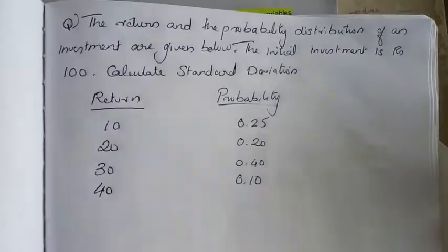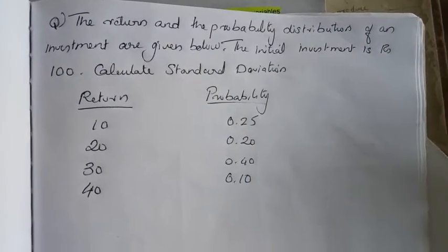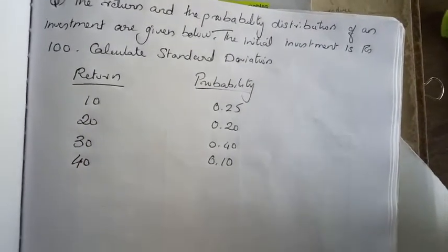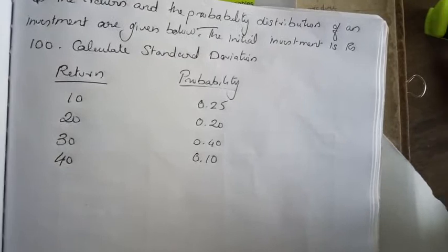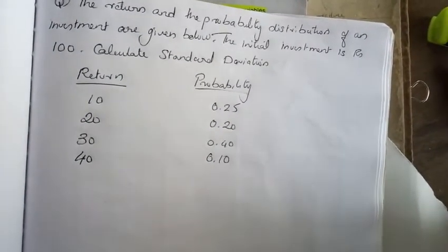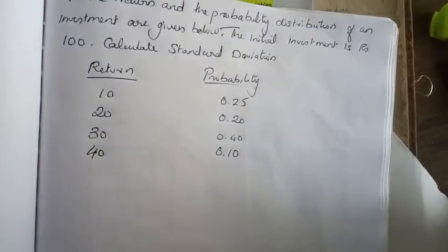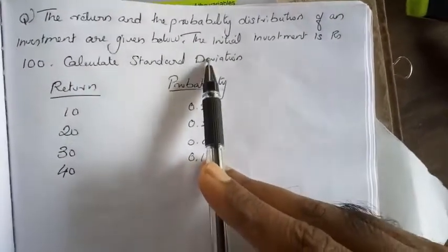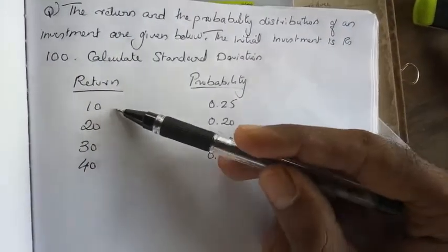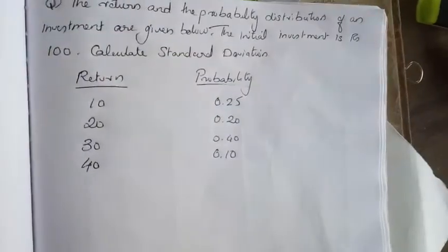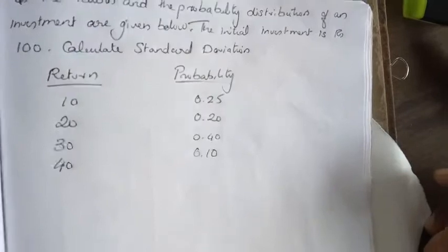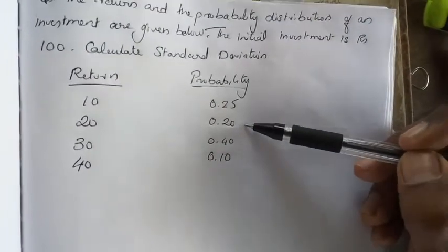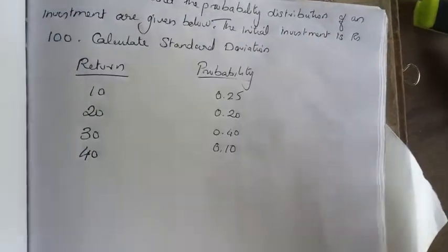The return and the probability distribution of an investment — this is the return, this is the probability, this is the chance. We will give you the chance of the risk. We had $100 as our investment amount.